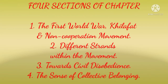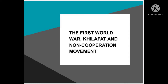Is chapter ko shuru karne se pehle aapko pata hona chahiye ki ye chapter 1920 se start hai. In this chapter we will pick up the story from the 1920s and study the Non-Cooperation and Civil Disobedience movements. We will explore how the Congress sought to develop the national movement and how different social groups participated — kis tarah se Congress ka role raha aur different social groups ne is movement mein kya role play ki. Our first section covers First World War, Khilafat Movement and Non-Cooperation Movement.